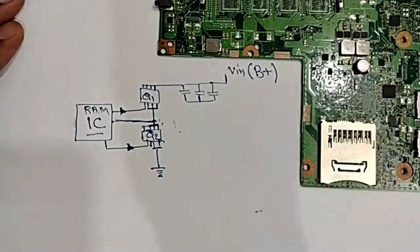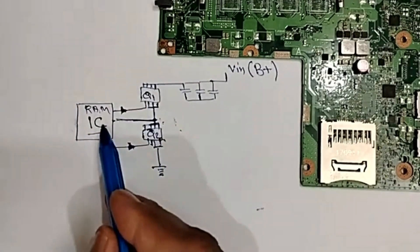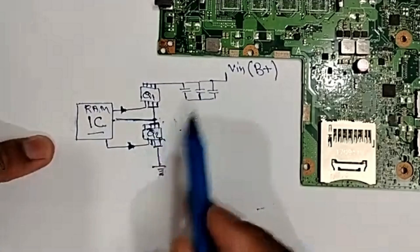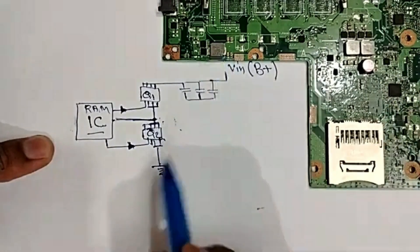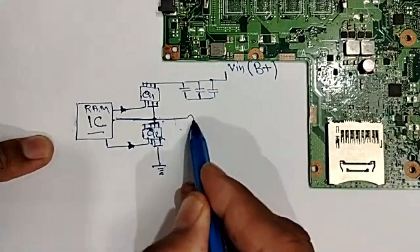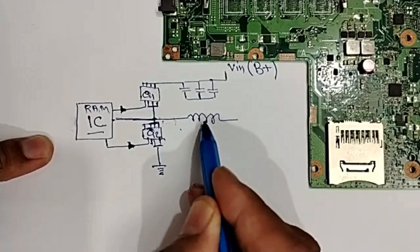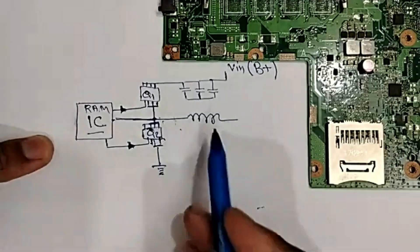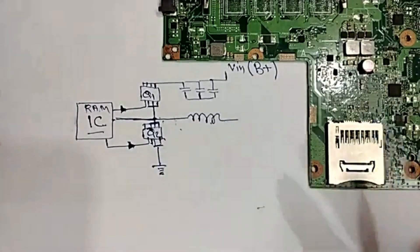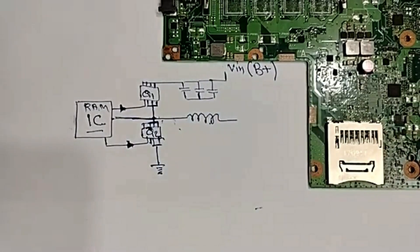Your likes, comments, and shares are my motivation. So, we have the IC, the two MOSFETs, and the coil. The inductor or coil — this one here — is never connected to ground. No connection with ground. But for us, this one is connected to ground — means short.